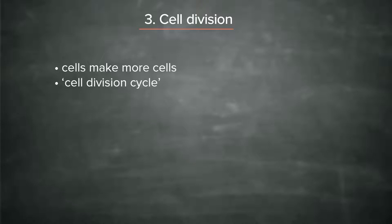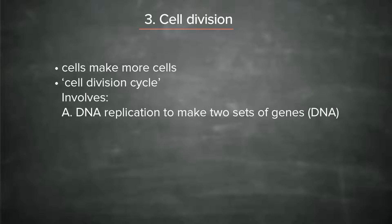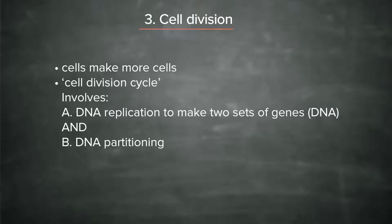This involves, firstly, replication — or making more of the DNA. Taking the DNA, the genes that are in one cell, and making a whole other set of them, so you've now got two sets. So DNA replication makes two sets of the genes, since, as we discussed, the genes are DNA. And secondly, DNA partitioning or segregation, which divides the DNA between daughter cells.